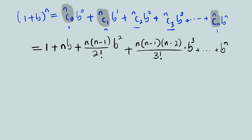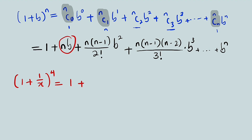Suppose we wish to expand (1 plus 1/x) to the power of 4. This will be equal to: remember the first term is always 1. So we have 1 plus n multiplied by b. Here n is equal to 4 and b is 1 divided by x. So 4 multiplied by 1/x gives us 4 divided by x. So the second term is 4 divided by x.